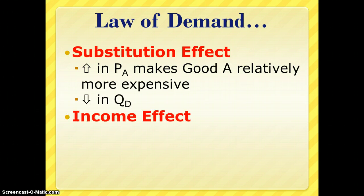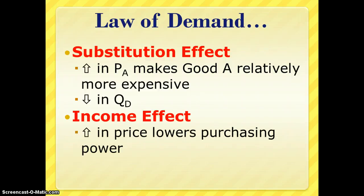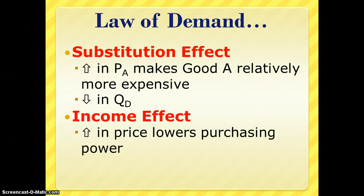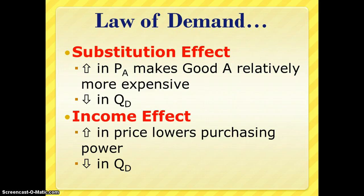The income effect is similar. If there is an increase in price, it lowers our purchasing power. Our actual income is the same, but we can't buy as much of good A as we used to because of the higher price. And therefore there is a decrease in the quantity demanded for that good. So both of these effects are essentially driving the downward sloping nature of the demand curve.